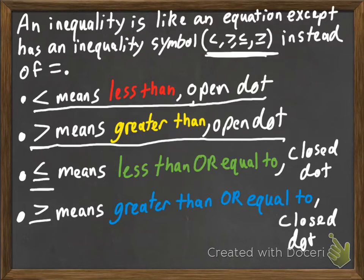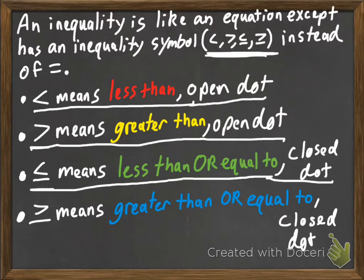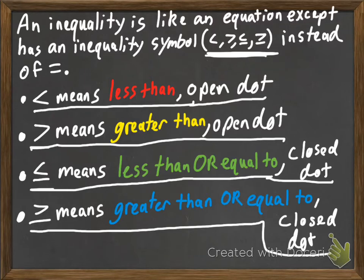The next symbol means less than or equal to — the left is going to be less than the right, or it can be equal to the right, and it's represented with a closed dot. Our last symbol means greater than or equal to — the left can be greater than or equal to the right.